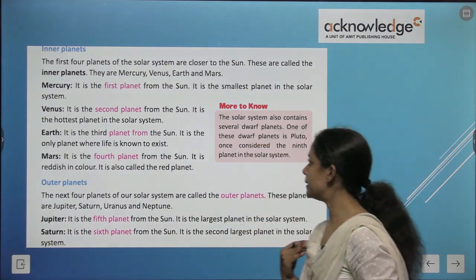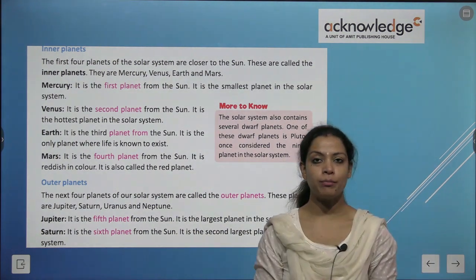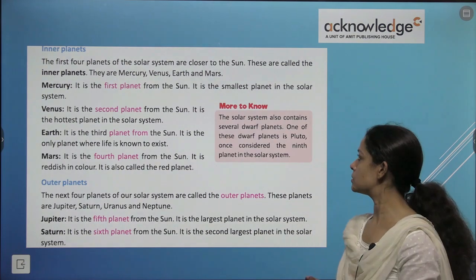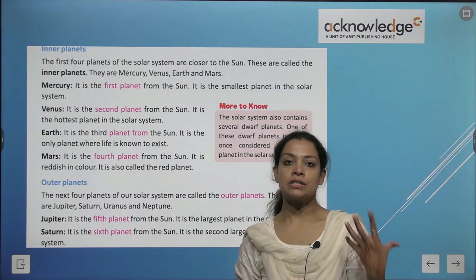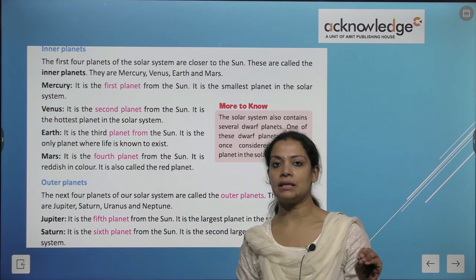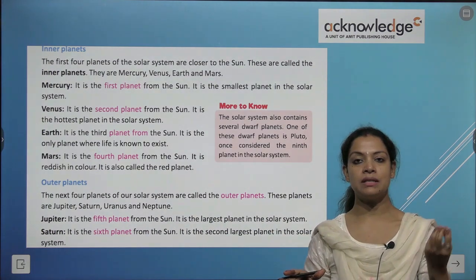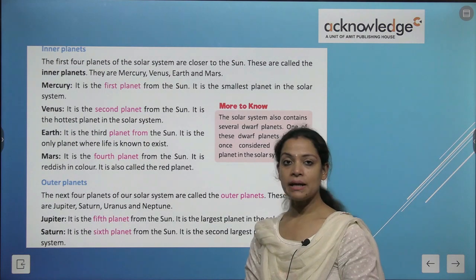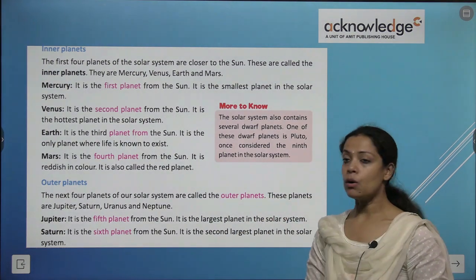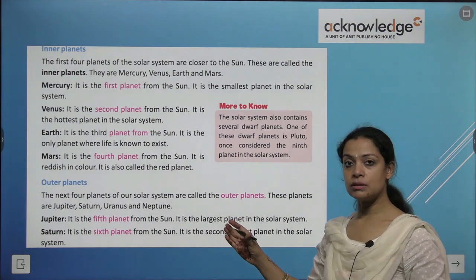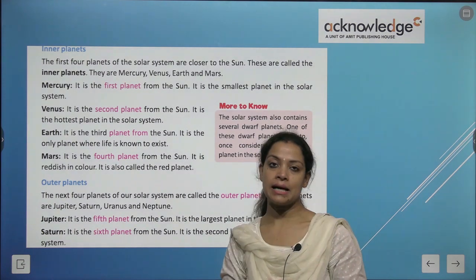The solar system also contains several dwarf planets — small planets in the solar system. One of these is Pluto, considered the ninth planet but now classified as a dwarf planet. The next four planets — Jupiter, Saturn, Uranus and Neptune — are farther from the sun and are called the outer planets.